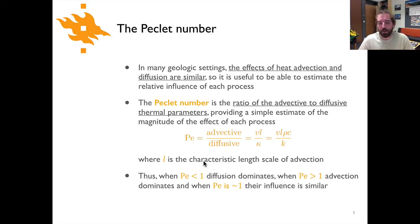If you look at the equation, the idea is pretty simple. If Peclet number is less than one, that means diffusion dominates. In other words, the diffusive term is bigger than the advective term. Conversely, when the Peclet number is greater than one, that means the advective terms are larger than the diffusive terms. And when it's about one, their influence is similar.